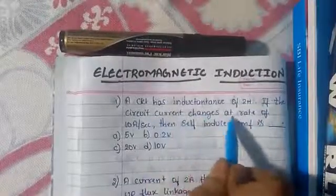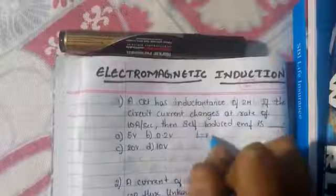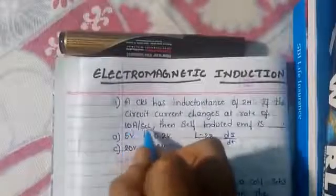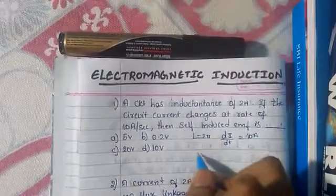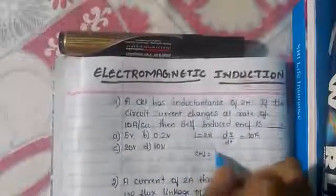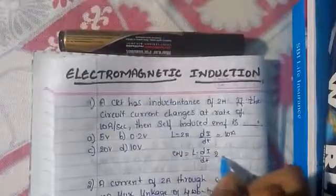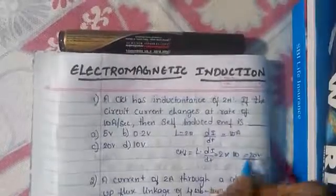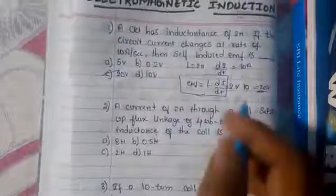First question: a circuit has an inductance of 2 Henry. If the circuit current changes at the rate of 10 amps per second, find the self-induced EMF. Given: L = 2 Henry, di/dt = 10 amps per second. The self-induced EMF is given by EMF = L × di/dt = 2 × 10 = 20 volts.